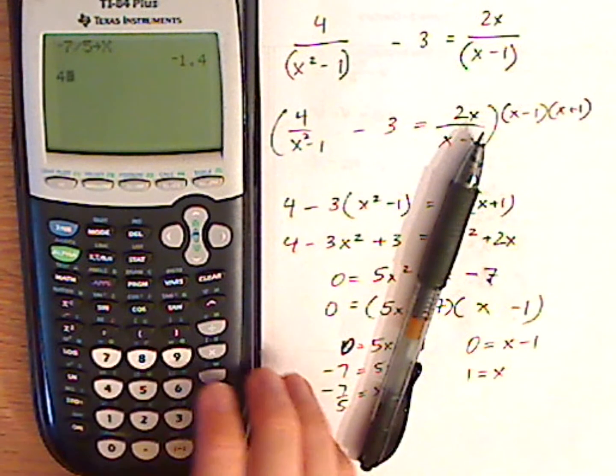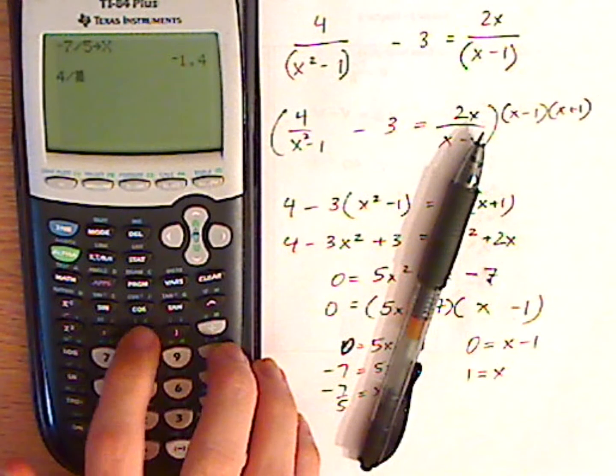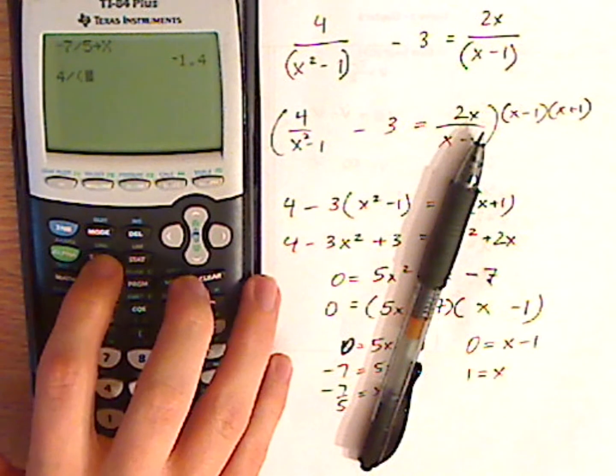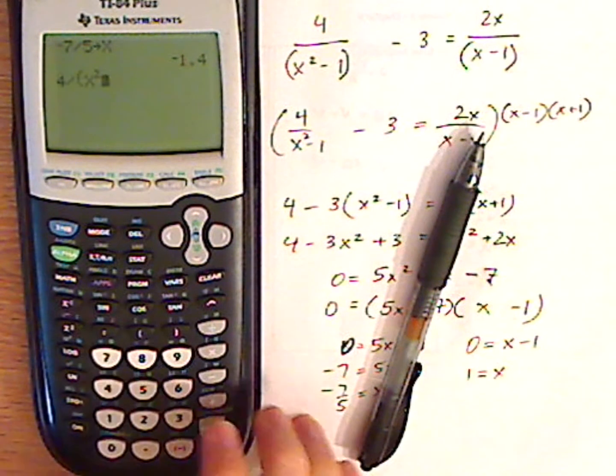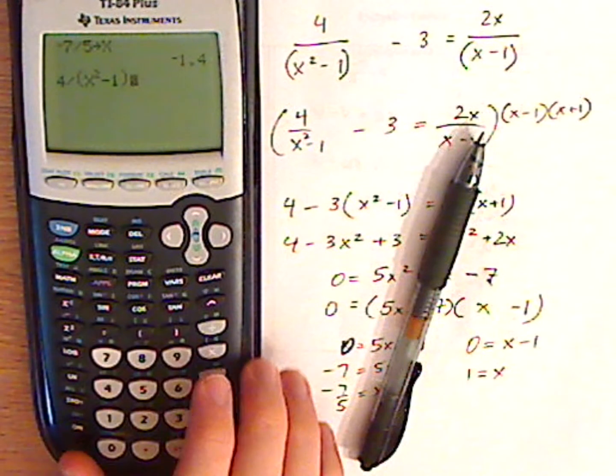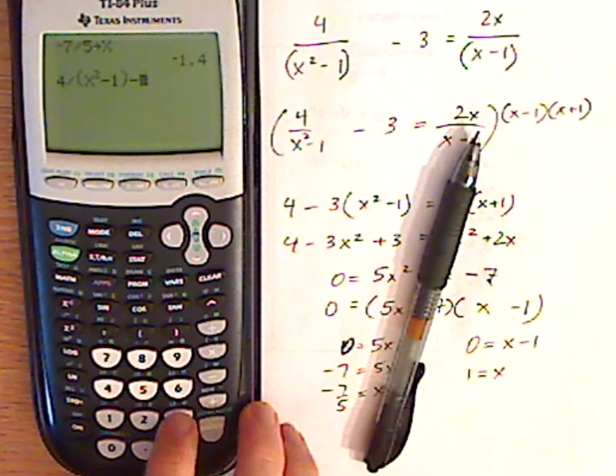So four divided by parentheses, then I just use my variable button which is right here, x squared minus one, close parentheses, minus three.